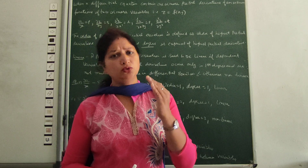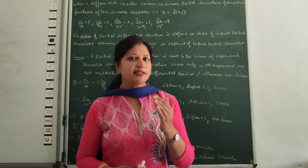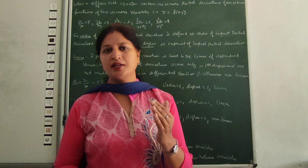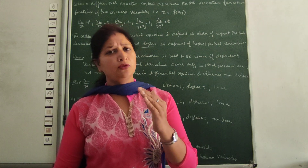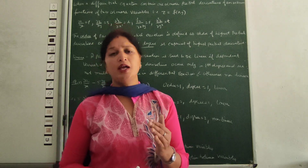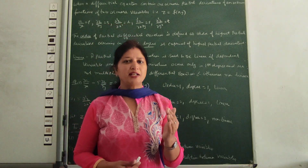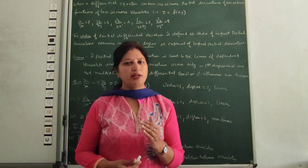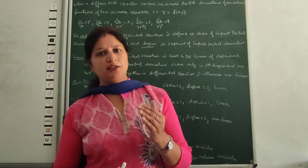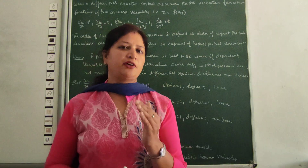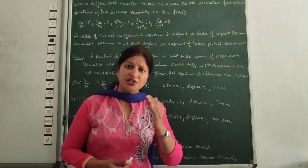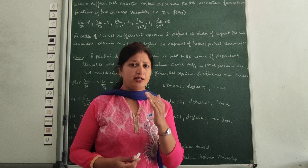So what do we say? We write curly z by curly x, and curly z by curly y. These are called partial derivatives, because z is with respect to x and y — because z is a function of x and y.